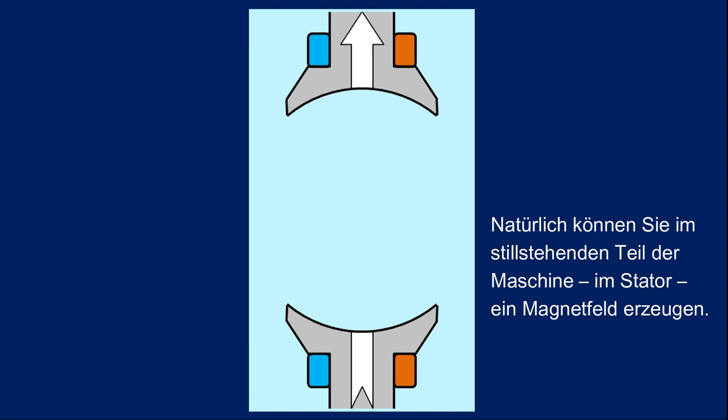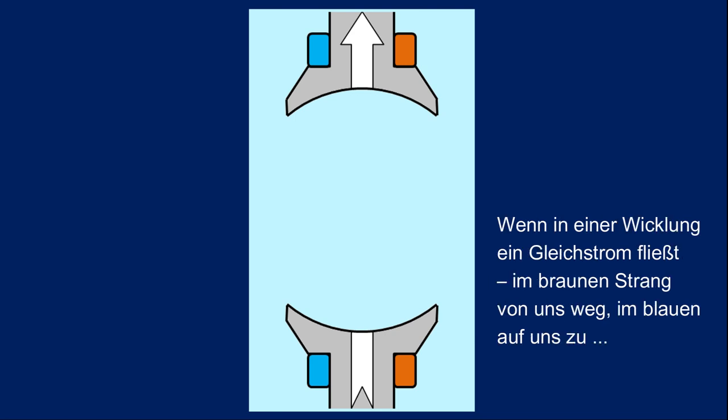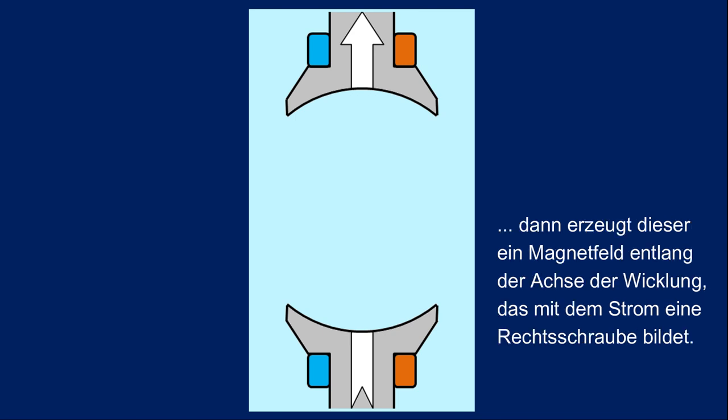Of course you can create a magnetic field in the stationary part of the machine, in the stator. A direct current flowing in a winding, in the brown winding strands away from us, in the blue winding strands towards us, creates a magnetic field along the axis of the winding, forming a right-hand helix together with the current.